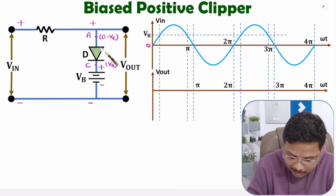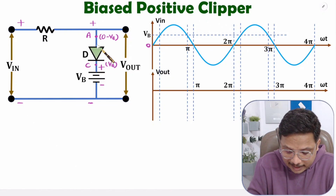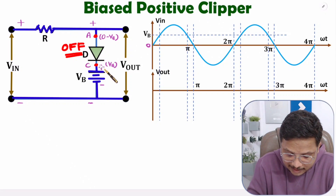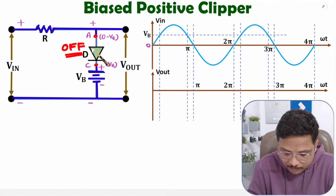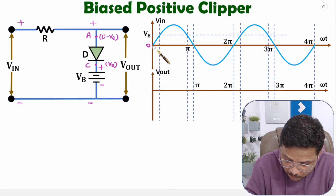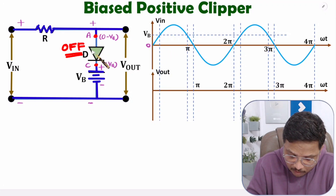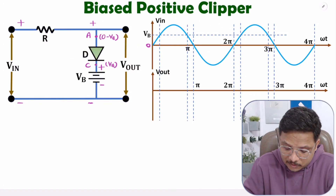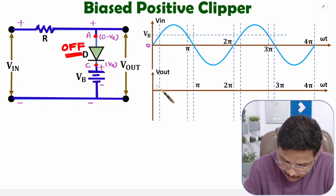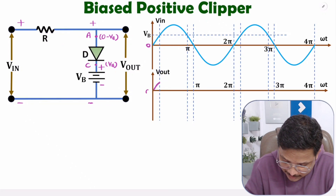So VB voltage at cathode is more than at anode during 0 to VB — meaning cathode is greater than anode, so this diode will be in reverse bias, meaning it will be off. During 0 to VB, the diode will be off. As the diode is off, V-in will appear at the output side.